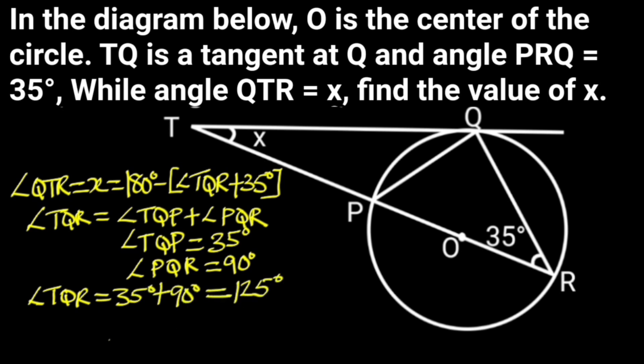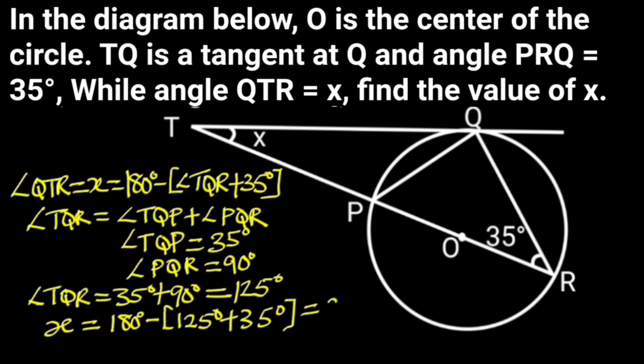Hence angle TQR equals 35 degrees plus 90 degrees, which is 125 degrees. Therefore X equals 180 degrees minus (125 degrees plus 35 degrees), which is 20 degrees.